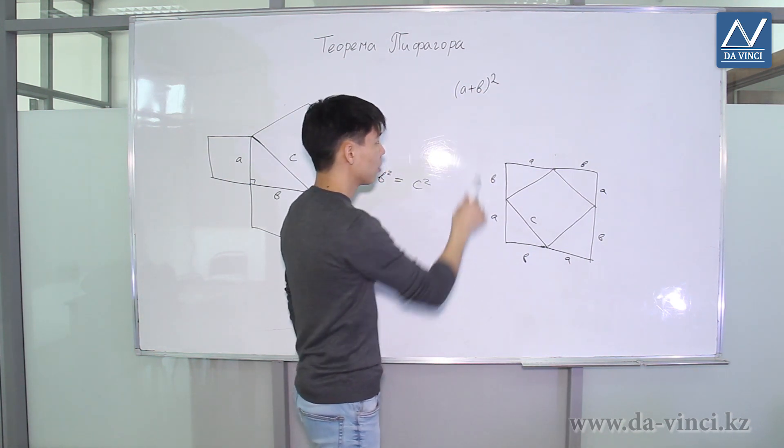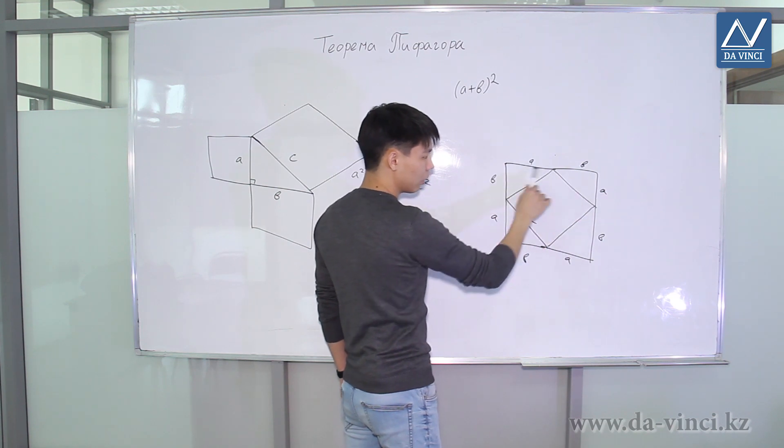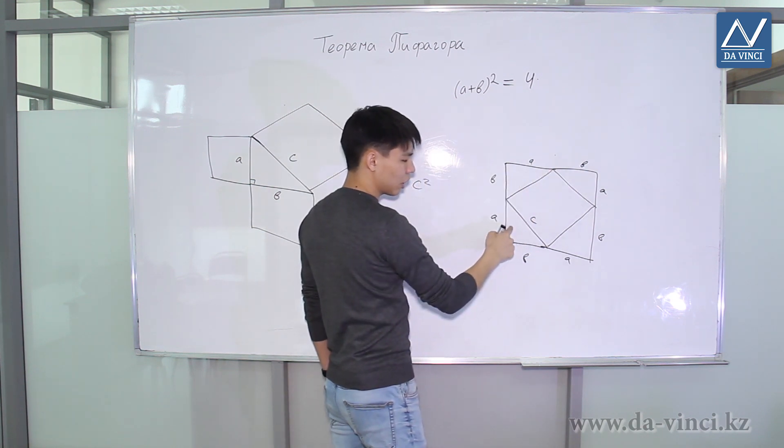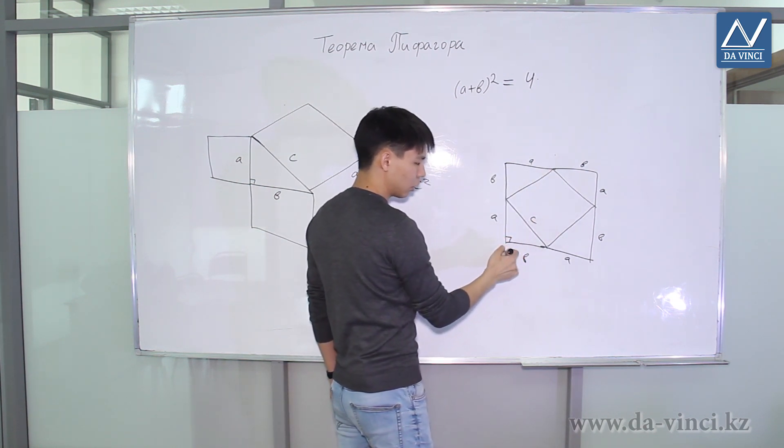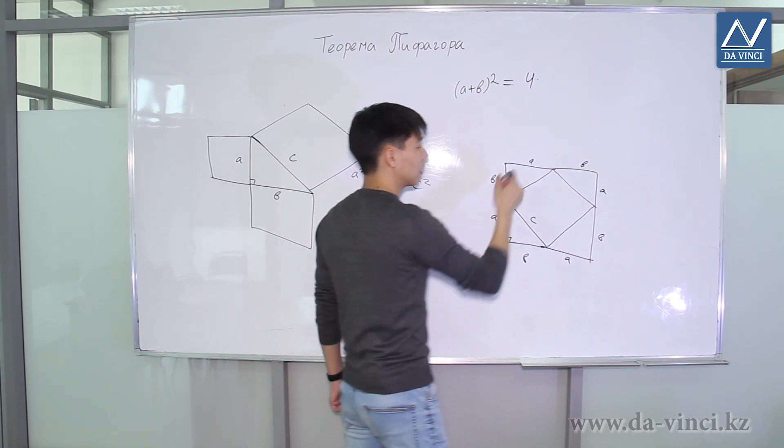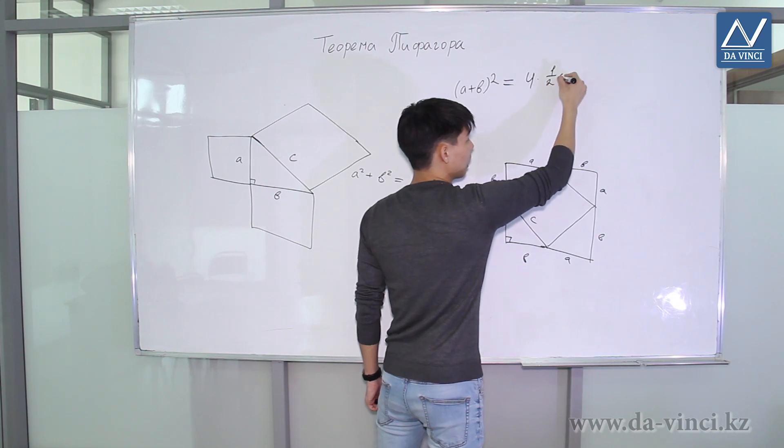But on the other hand, this square consists of four triangles, identical, four triangles. Let me remind you that these are right triangles. The area of a right triangle is the product of its legs, that is, four triangles with area one half AB.